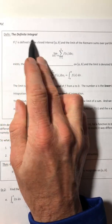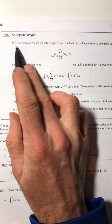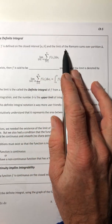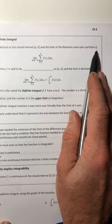Well, let's get into the definite integral. So if f is defined on that closed interval and the limit of the Riemann sums over partition delta,